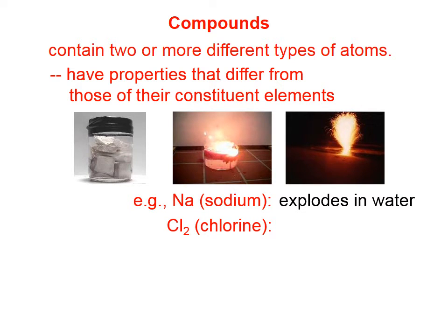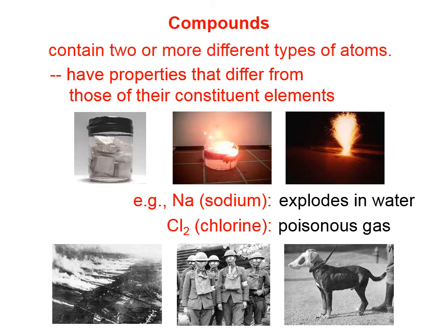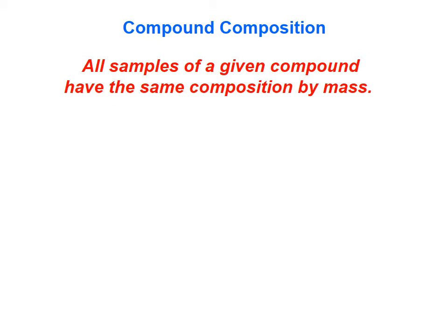Chlorine, in its elemental form, is a poisonous gas. It was used as a chemical weapon during the First World War. However, a very common substance — table salt — contains only these two elements. And table salt, as you know, is great for putting on steak, green beans, and so forth. Table salt has properties very different from the properties of the elements.